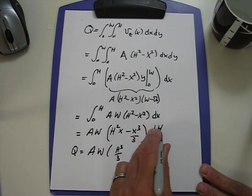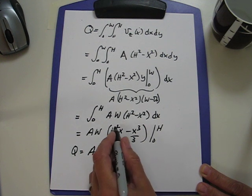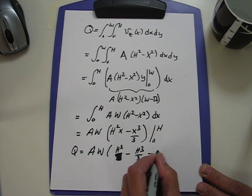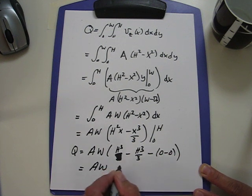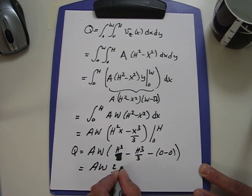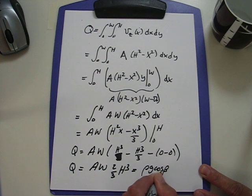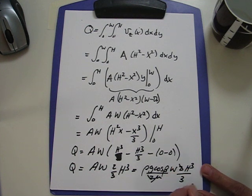We get A w h to the third over 3. Putting the A back in from the original problem, we get rho g cos beta over 2 mu times w times 2 times h to the third over 3. And that's our final answer.